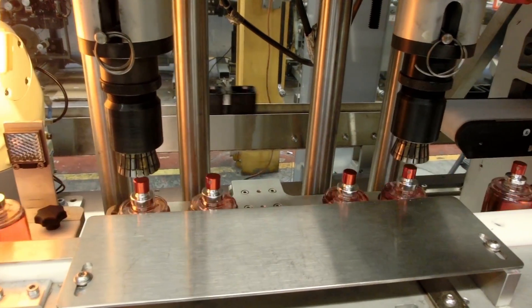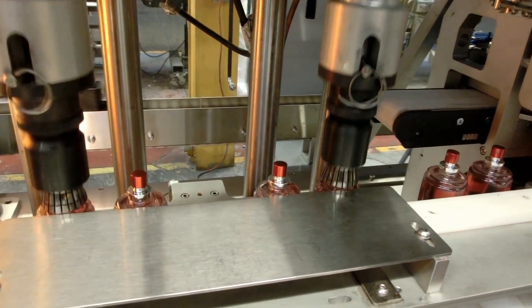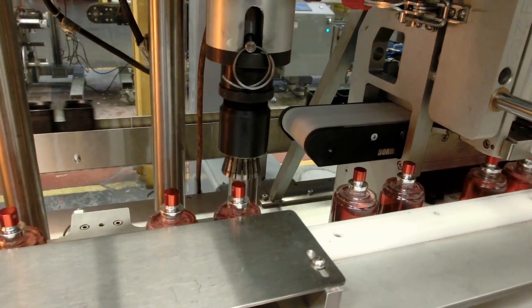The final inspection station uses sensors to detect the presence of the pumps and collars on the bottle.